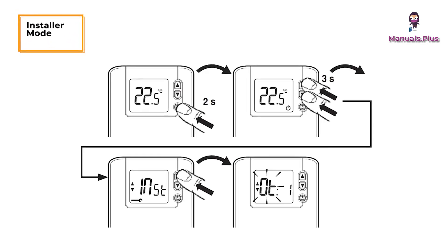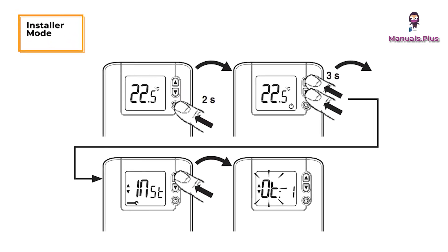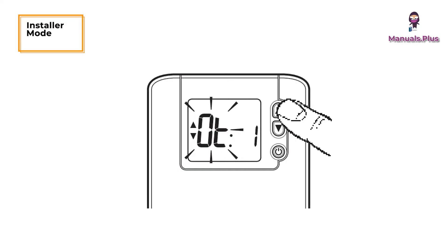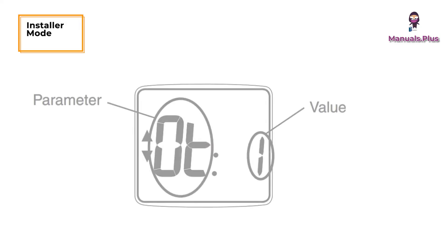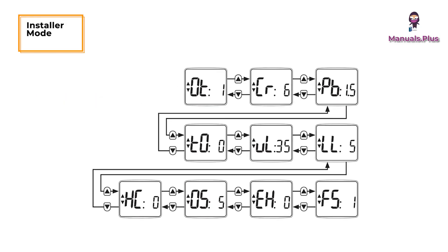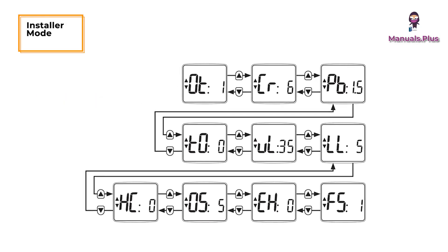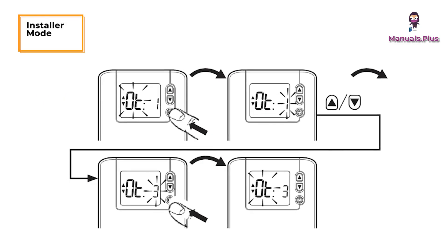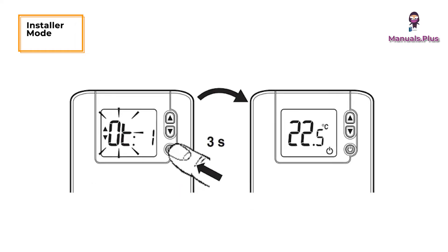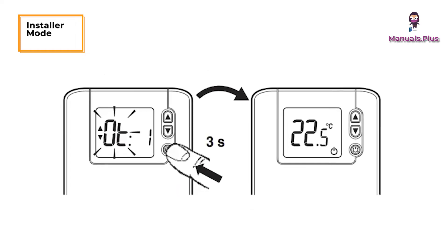Installer mode: to enter installer mode, select a parameter using the display parameter flowchart. To change a parameter or to exit installer mode, follow the on-screen parameters.